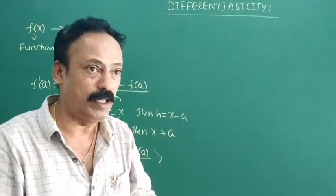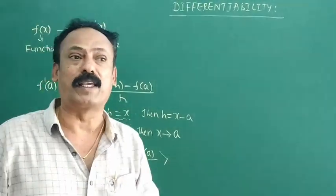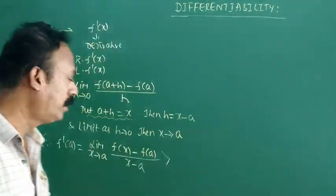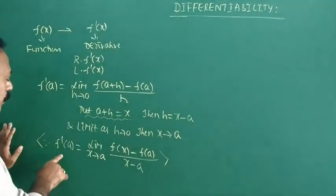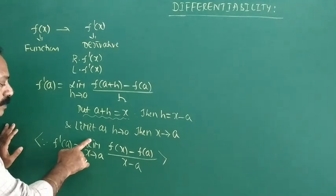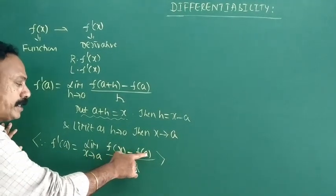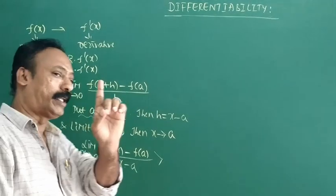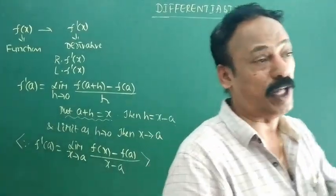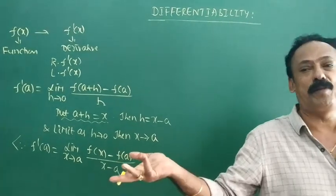So the modified formula for the derivative is: f dash of a equals limit x tends to a of f of x minus f of a by x minus a. We will use this formula to solve problems.